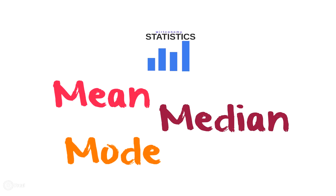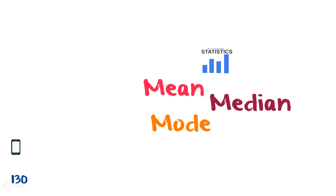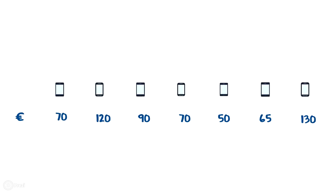Welcome to Wordconomy. Today we're going to take a look at the measures of central tendency: the mean, the median, and the mode. A used electronic merchant offers seven differently priced smartphones. Our job is to calculate the measures of central tendency for the different prices.